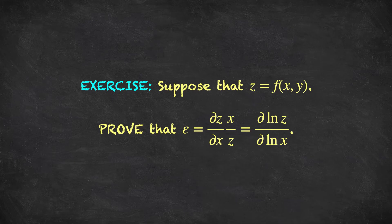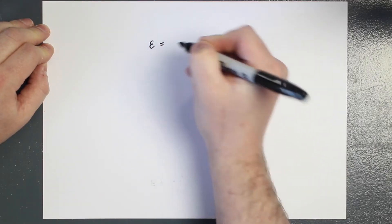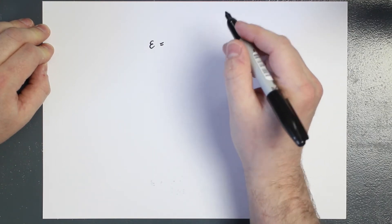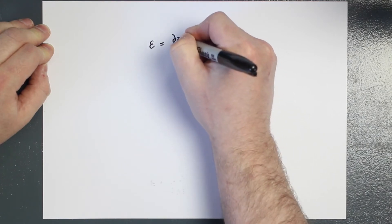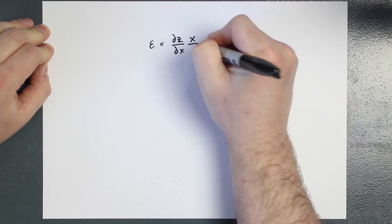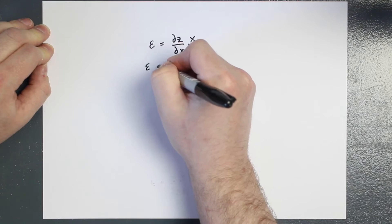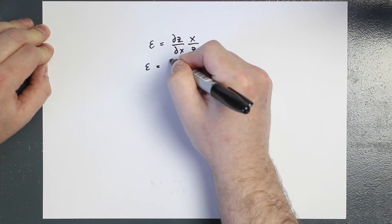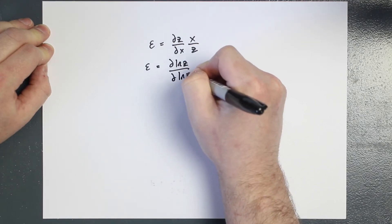We've been asked to prove that the elasticity of z with respect to x — the point elasticity, denoted epsilon — is the partial derivative of z with respect to x multiplied by x over z, and we need to show that this is equal to the partial derivative of log z with respect to log x.